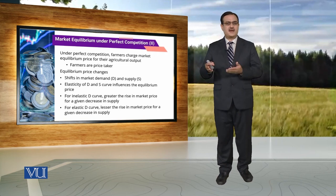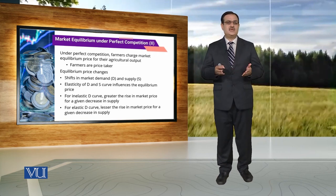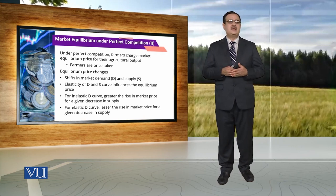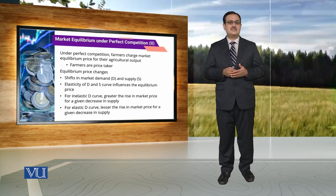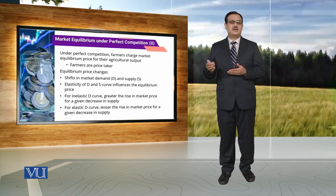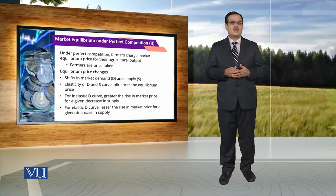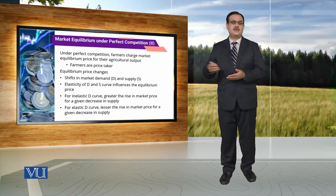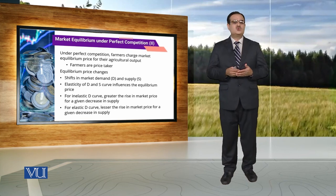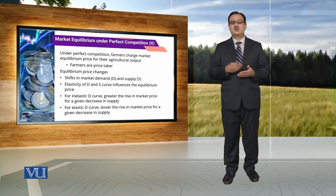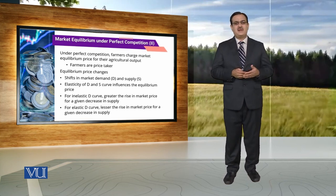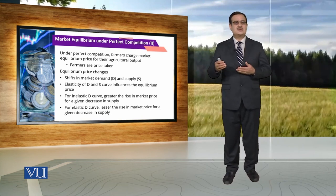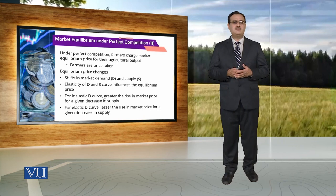Whatever price the farmer charges, it is the equilibrium price that prevails in the market. When we say equilibrium price, this is the price where market demand is equal to market supply. If there are simultaneous shifts in demand and supply, it has some impact on the equilibrium price. The pattern of elasticity of demand and supply curves also has some influence over the equilibrium price.